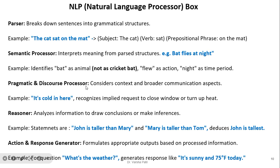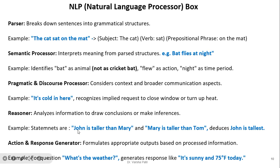The pragmatic and discourse processor considers context and broader communication aspects — for example, 'it's cold in here' recognizes the implied request to close the window or turn up the heat. The reasoner analyzes information to draw conclusions or make inferences — for example, given 'John is taller than Mary' and 'Mary is taller than Tom', it deduces that John is the tallest.